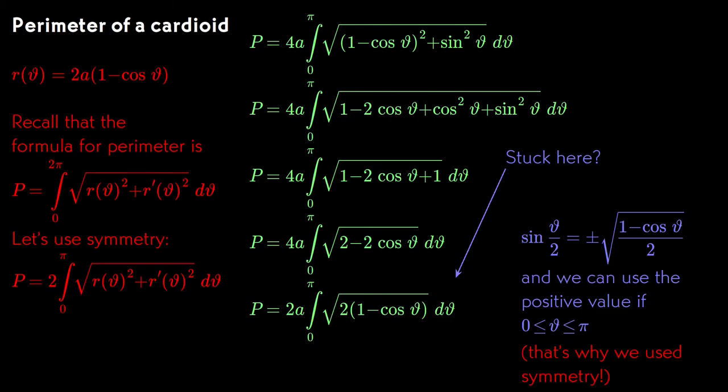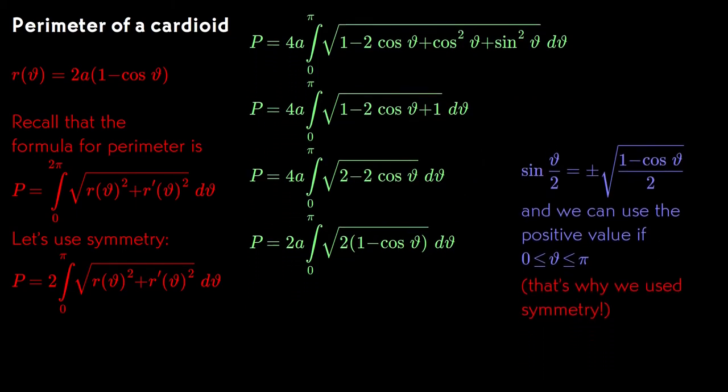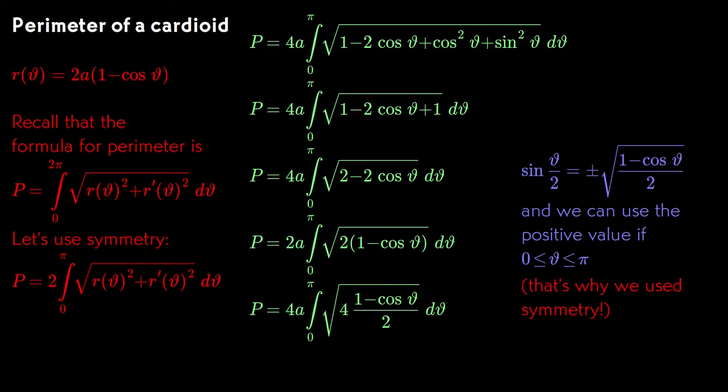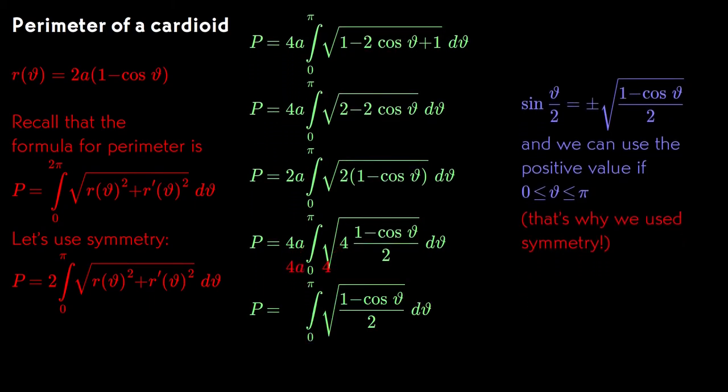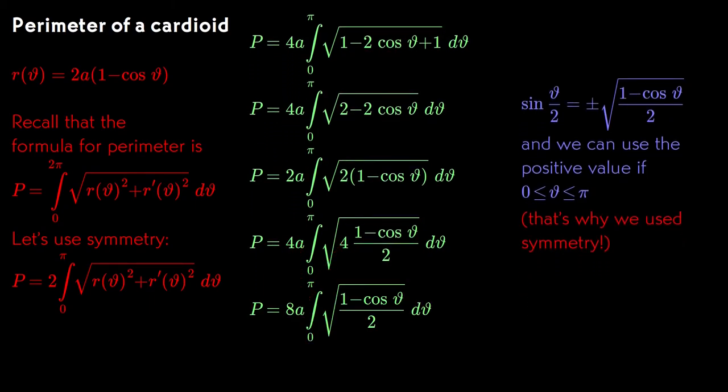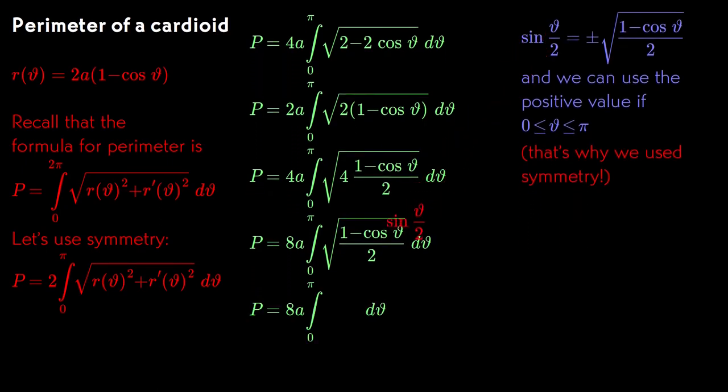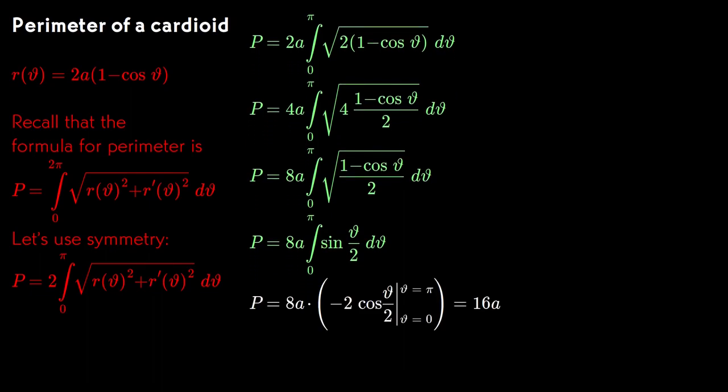From here, we need to tweak the form of the integrand to match the half-angle formula. And we can go back on algebra autopilot. And we get the somewhat surprising result that the perimeter is 16a, or four times the diameter of the cardioid.